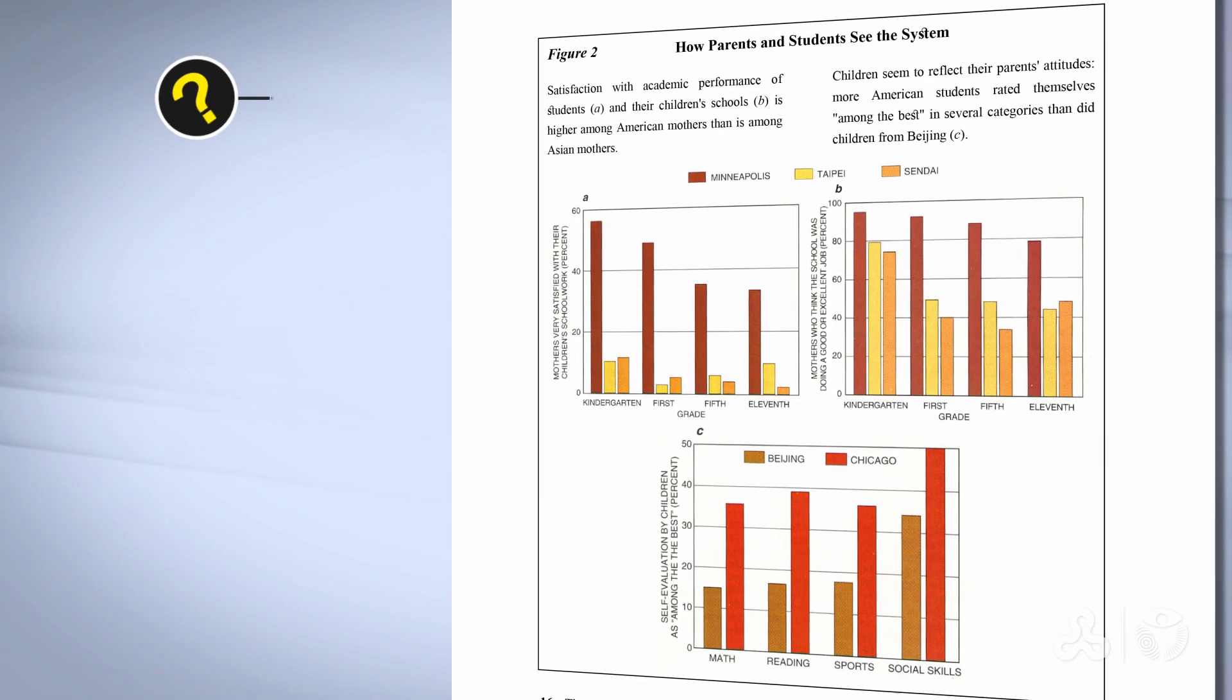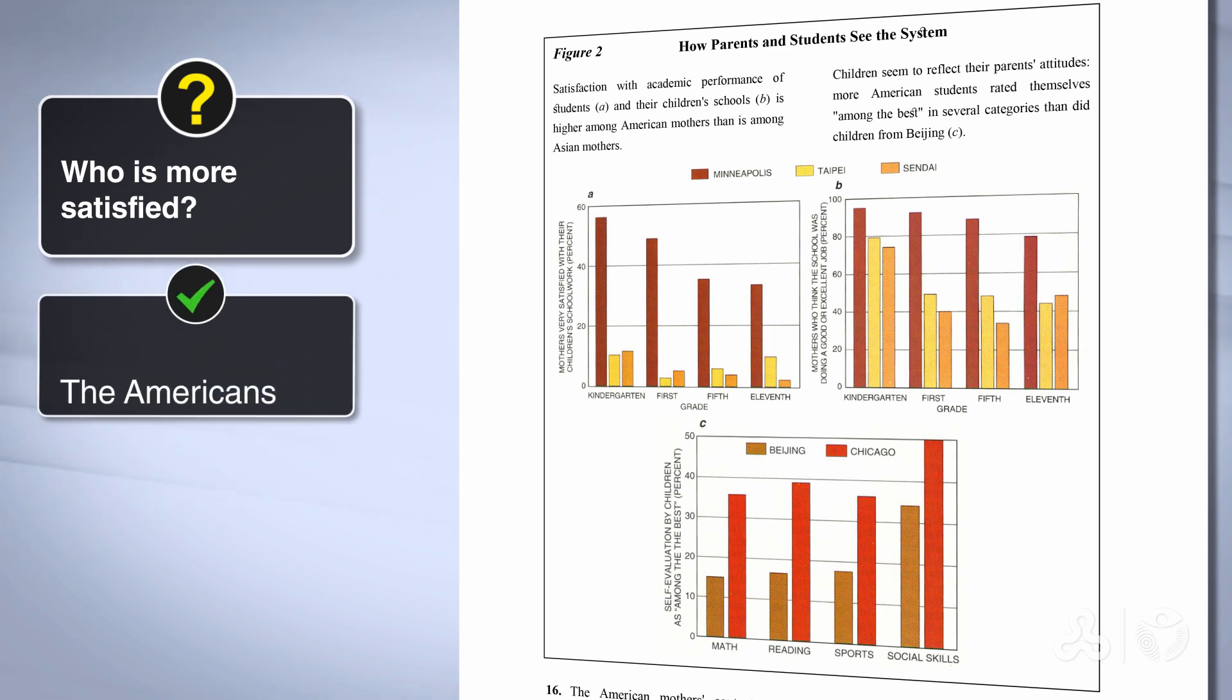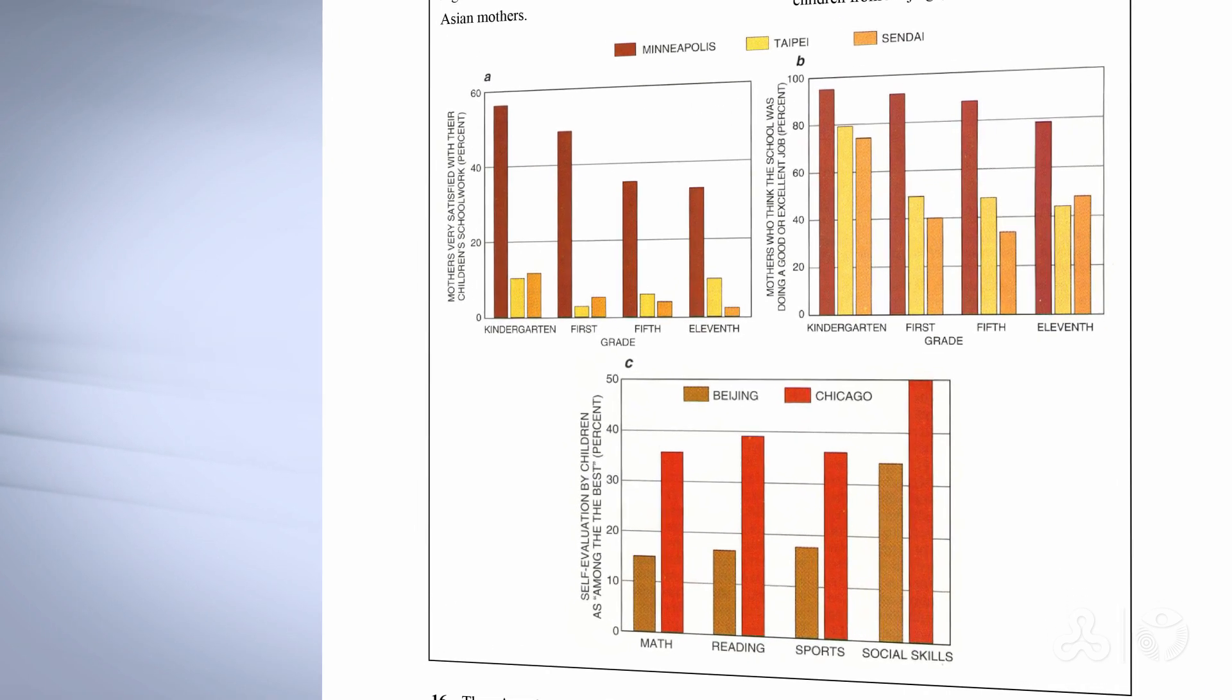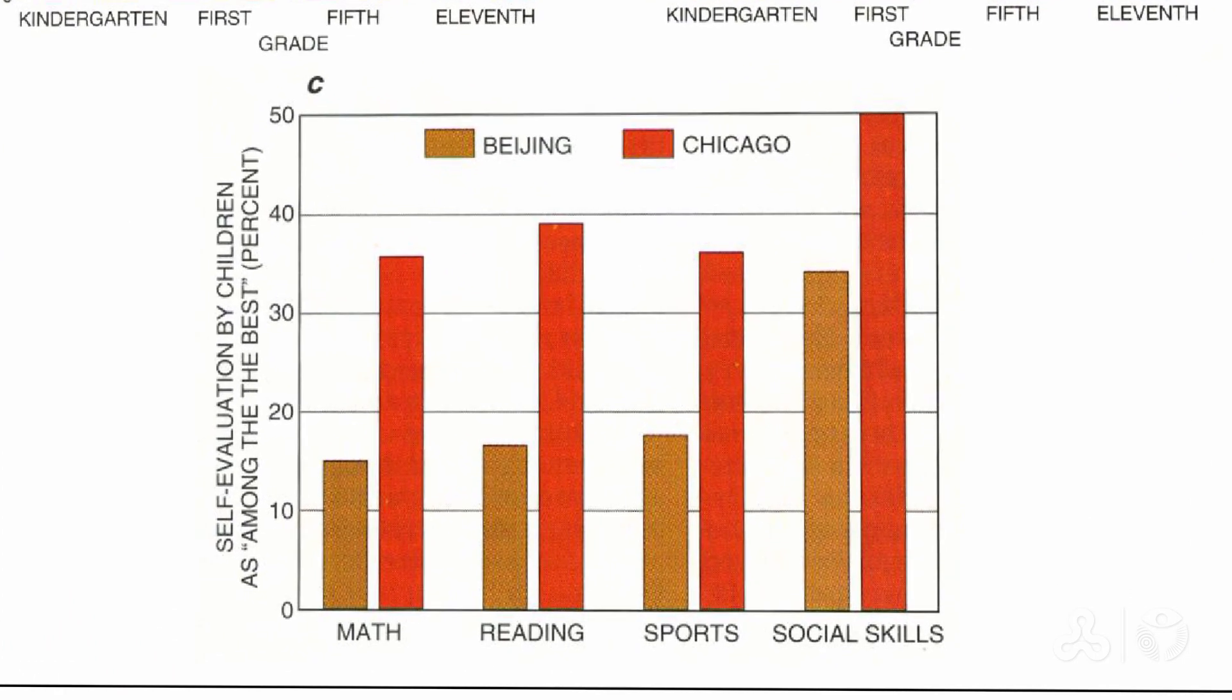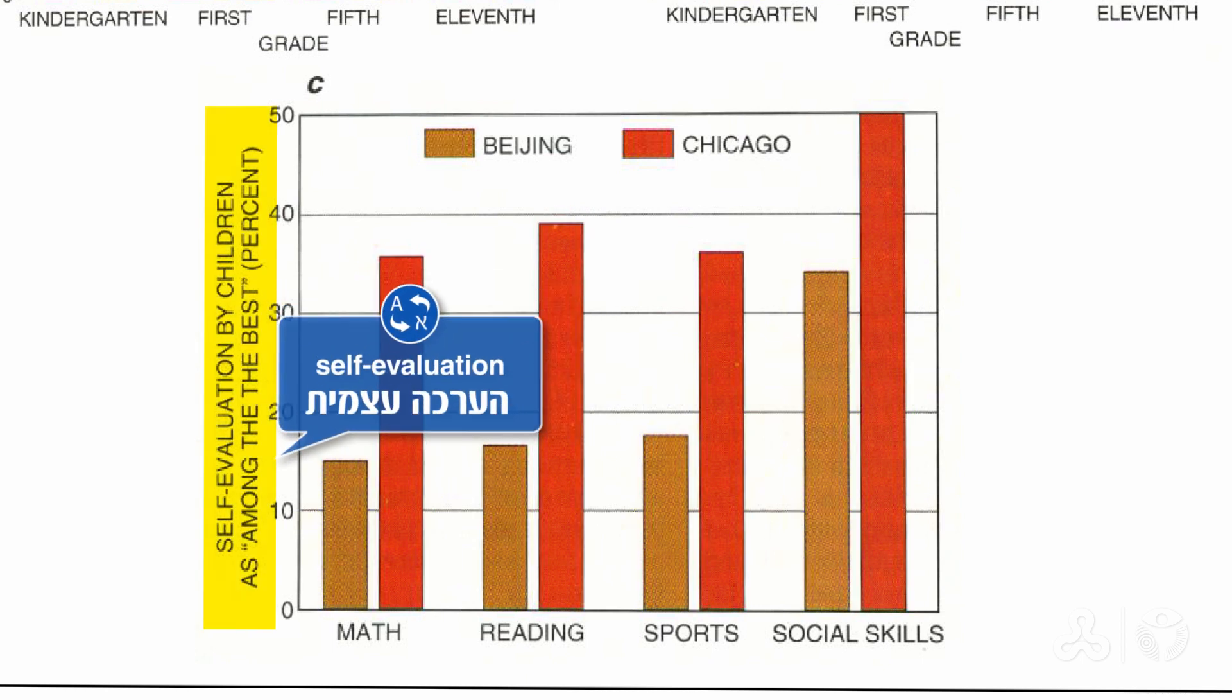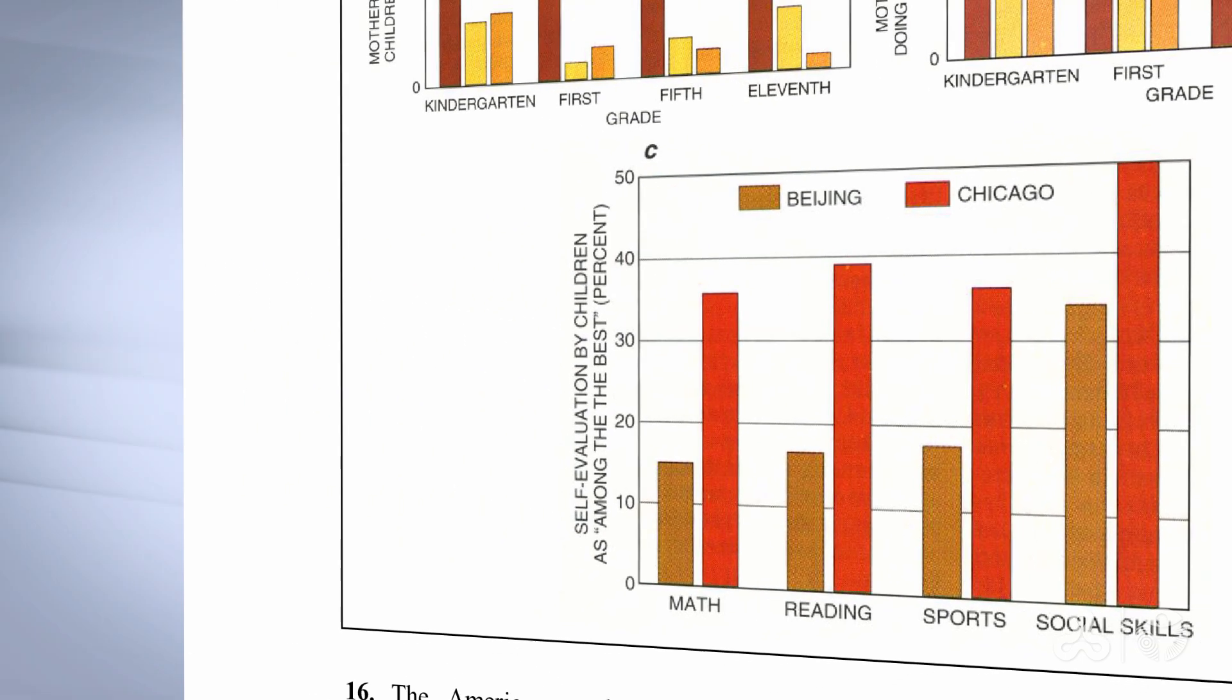Now, who is more satisfied? Of course, that's what we read now, and that's what we see in the bars. Surprise! The Americans are more satisfied. Let's look at the third graph. The third graph compares the children in both places, Chicago and Beijing, on how they see themselves as among the best. And again, we're asking, who is happy with himself or herself? The American child, of course.